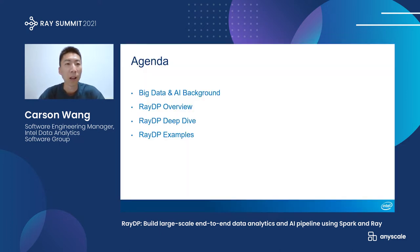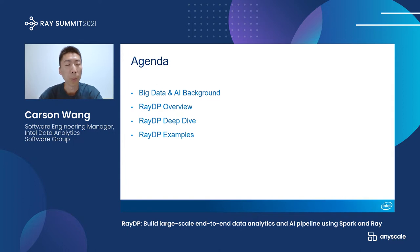This is today's agenda. I will first talk about some background of big data and AI, how people are trying to integrate big data and AI and what are the challenges we are facing. Then I will introduce Ray and RayDP projects and how we can build the end-to-end pipeline much more easily and efficiently. I will also introduce the RayDP API and architecture design, and show some examples using RayDP to build pipelines like Spark with XGBoost and Spark with Horovod on Ray.